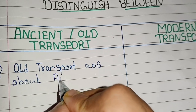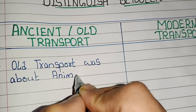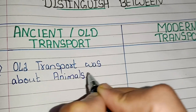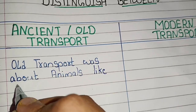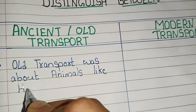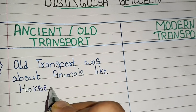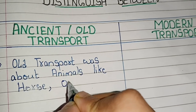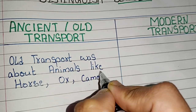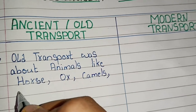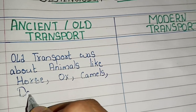Old transport was about animals like horse, ox, camels, donkeys, etc.